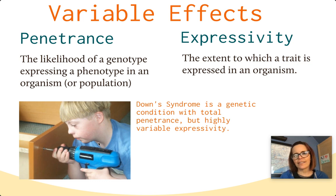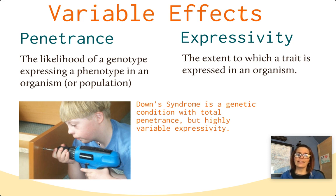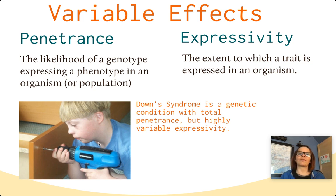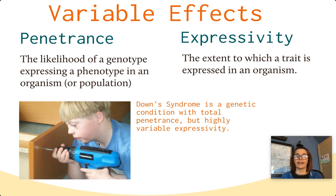Finally, penetrance and expressivity. Penetrance is the likelihood of a genotype expressing a phenotype. Expressivity is the extent to which a trait is expressed. Down syndrome is a genetic condition with total penetrance — once you inherit it, you will get it 100% of the time. However, how it expresses itself is very varied: skill levels and physical traits among people with Down syndrome are extremely variable, which is high expressivity. There's a lot more to say about Down syndrome, and we'll talk about that a little bit later. Have a great rest of your morning.